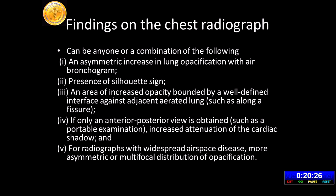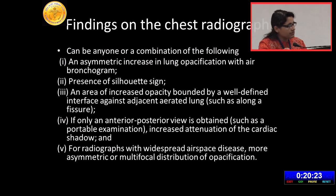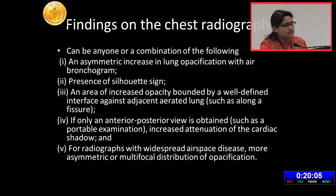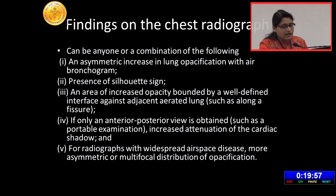There can be an asymmetric increase in lung opacification with or without air bronchogram. There can be a Silhouette sign. When two objects of similar density come in contact with each other, their intervening interface is lost on a radiograph — that is called a positive Silhouette sign. You can see an area of increased opacity bounded by a well-defined interface against adjacent aerated lung, like when the pathology is abutting a fissure, giving a clear demarcation.